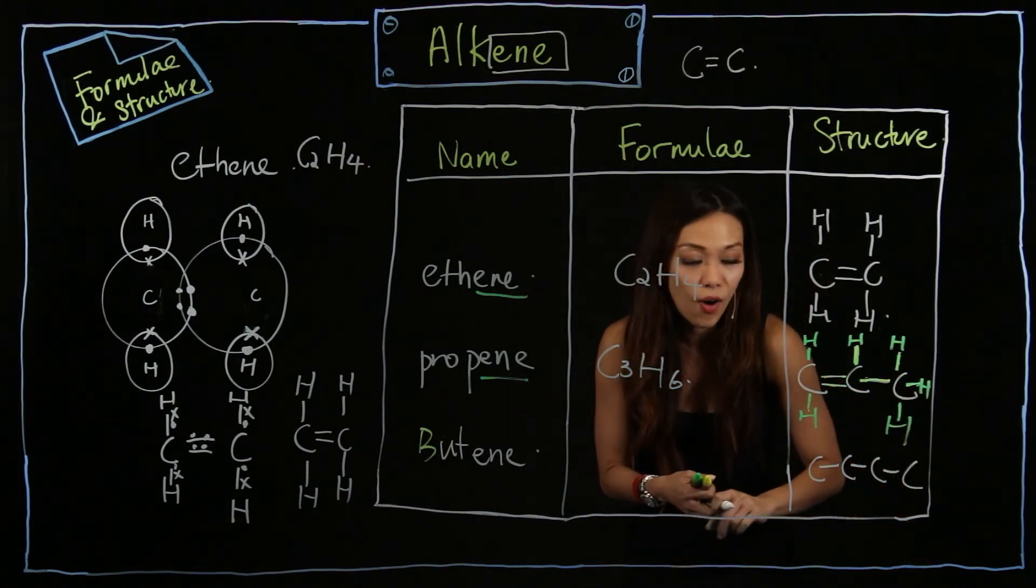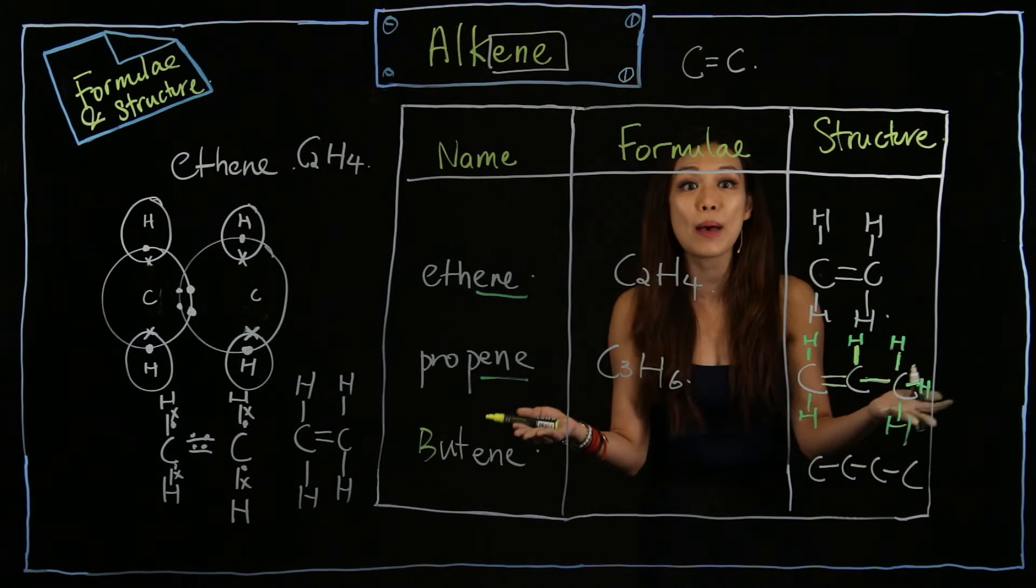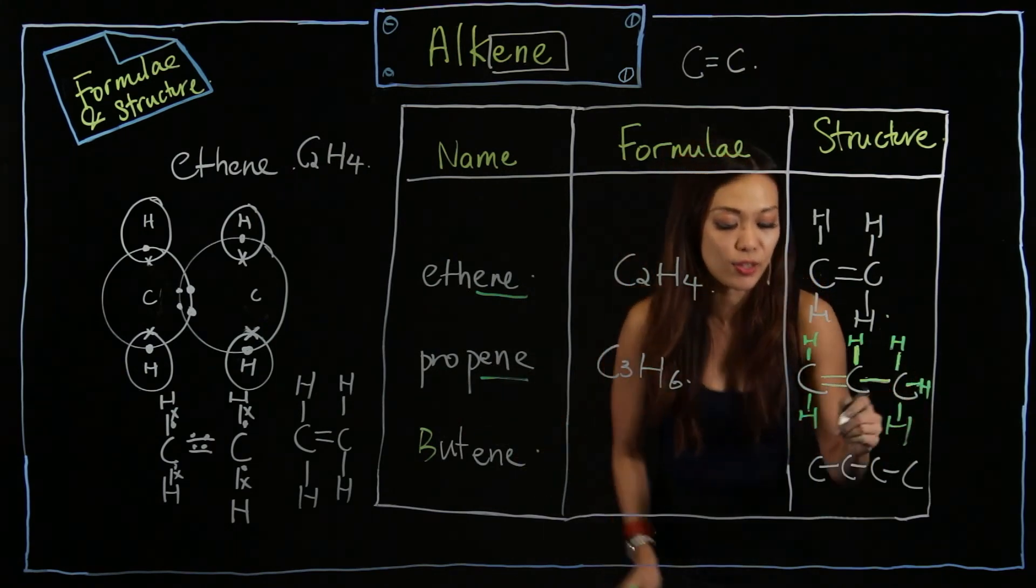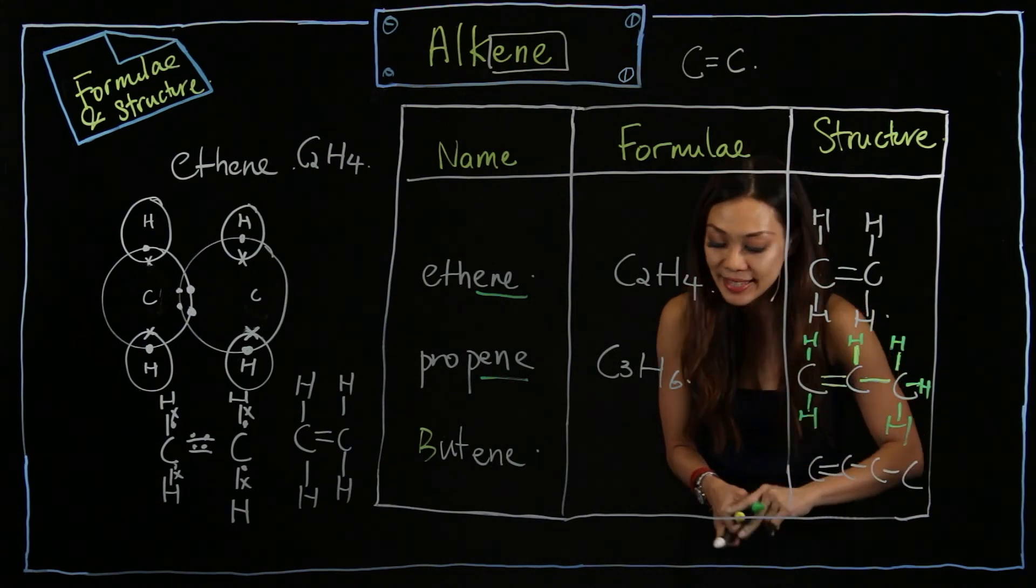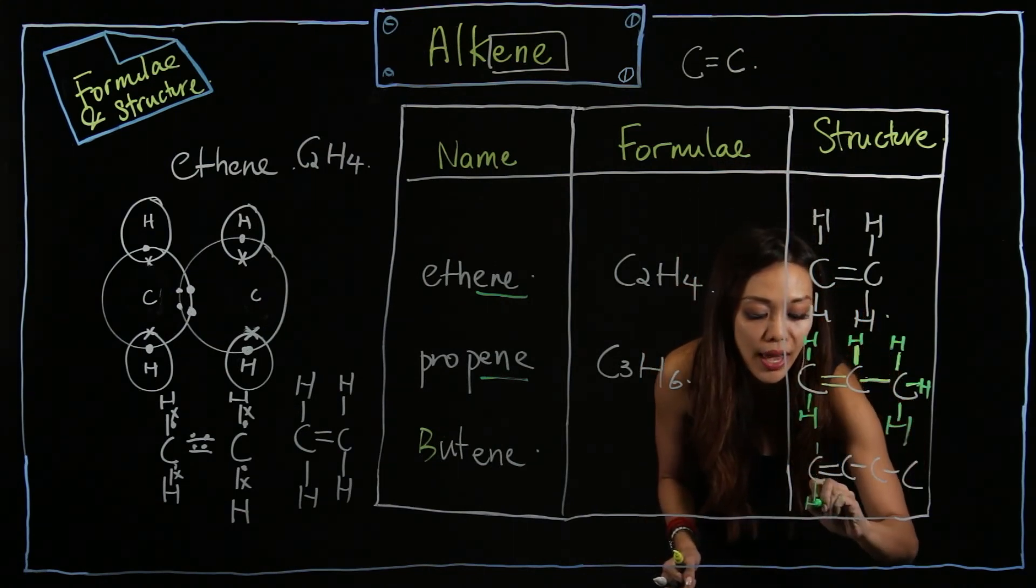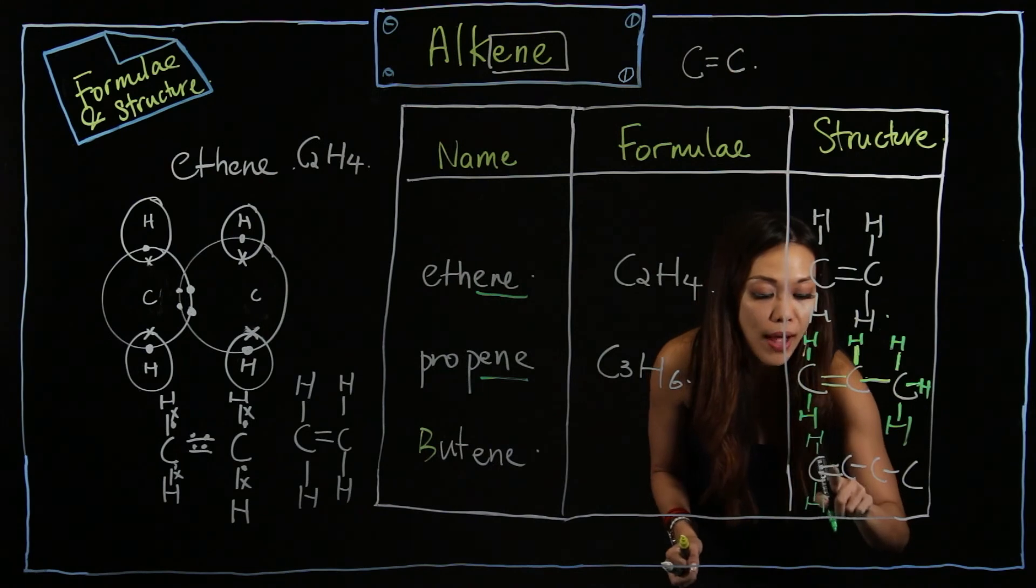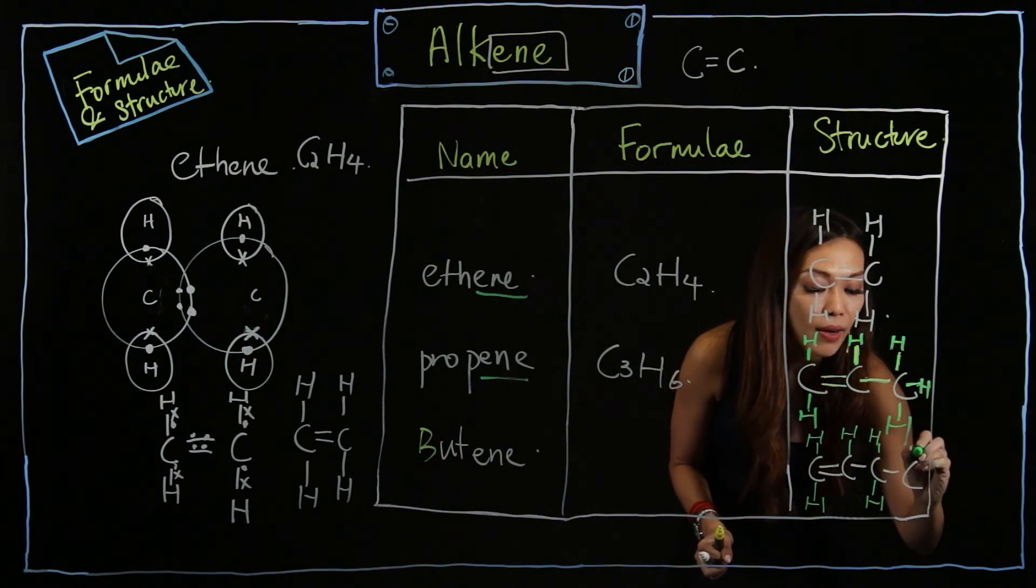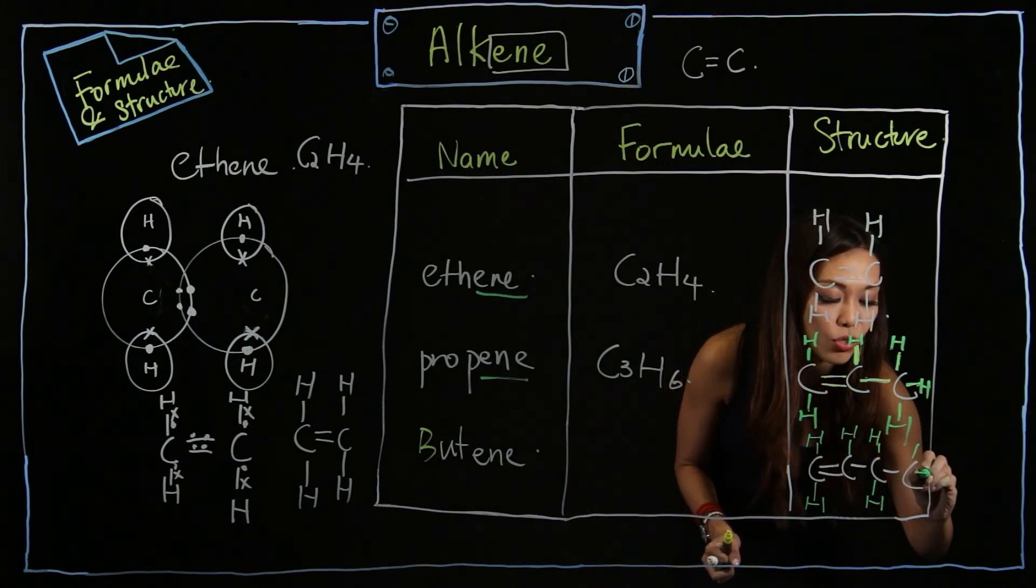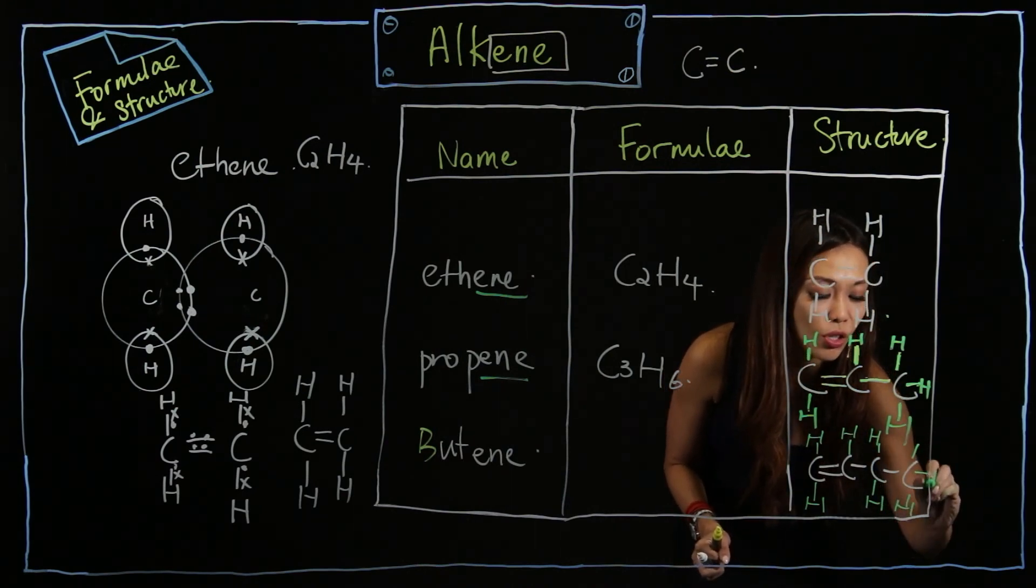Now, it doesn't matter where the double bond is. Like I said, it doesn't matter, so I'm going to draw it here. Same thing, I'm going to extend out the lines. One, two - H, H. One, two, three - one more H. One, two. One, two. H, H. Here I've got one, how many more to go? Three. One, two, three. H, H, H.